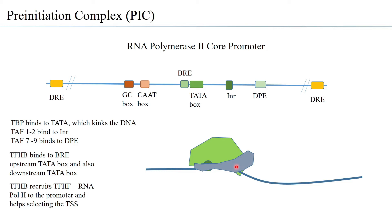The transcription factor 2B also attaches close to the RNA exit channel, positioning RNA polymerase in such a way that when the RNA is being synthesized it can exit through the exit channel. TF2B is therefore very important in ensuring that RNA polymerase 2 binds effectively to the DNA to initiate transcription.